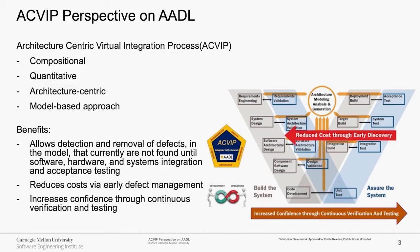Architecture-centric virtual integration process, ACVIP, is a set of technologies and practices that have been specifically designed and demonstrated to provide early detection and continuous verification throughout the lifecycle. The purpose of ACVIP is to address the affordability and associated risks of developing complex software-intensive systems through early virtual integration and analysis before implementation.